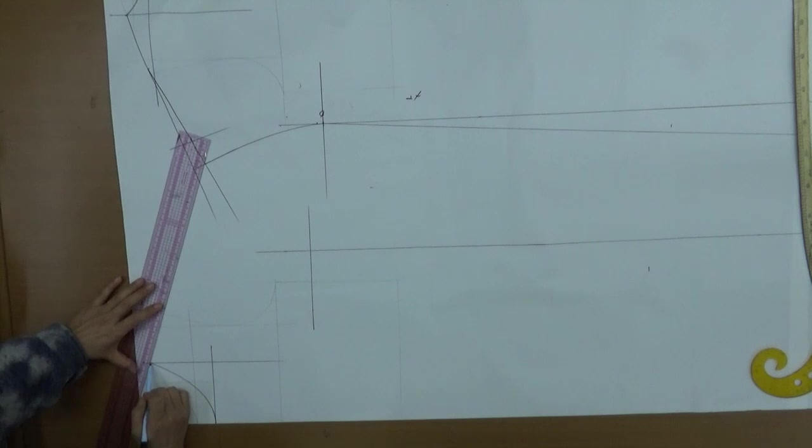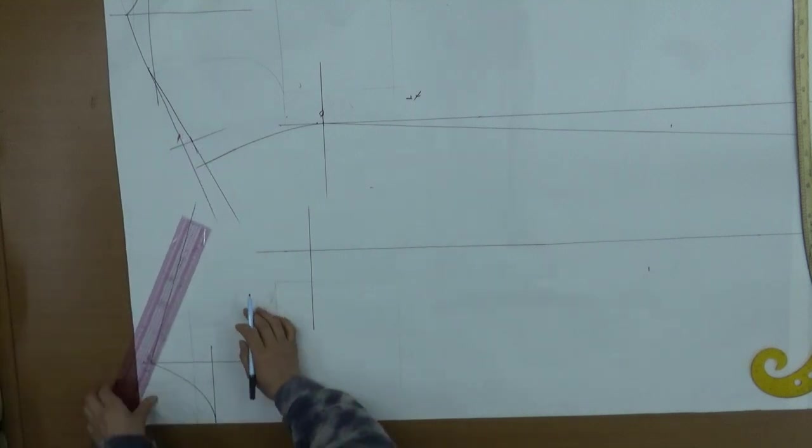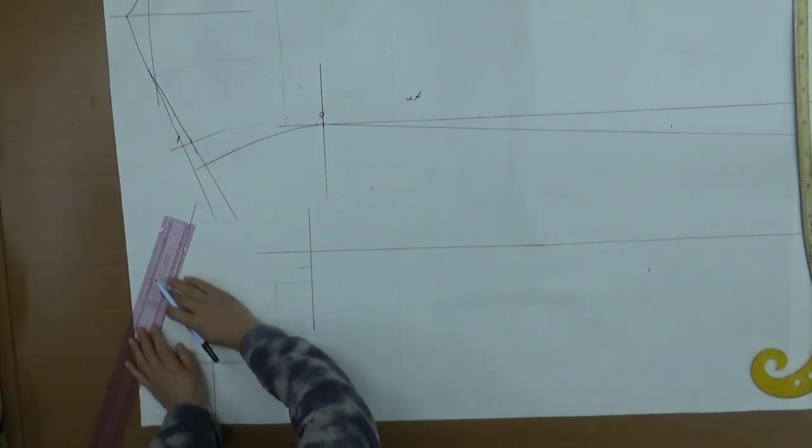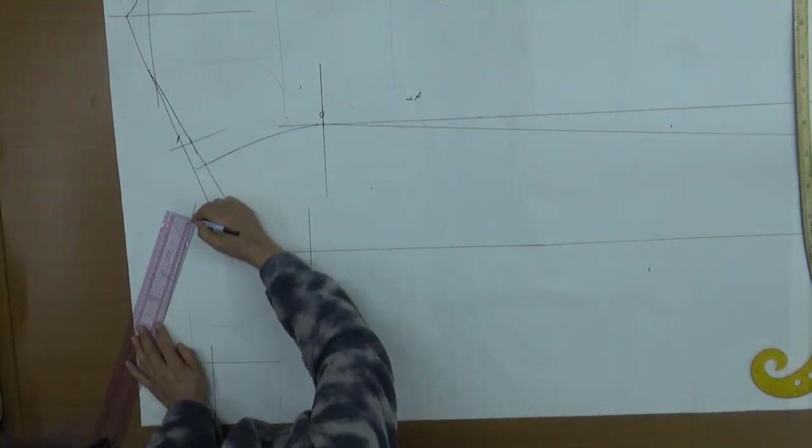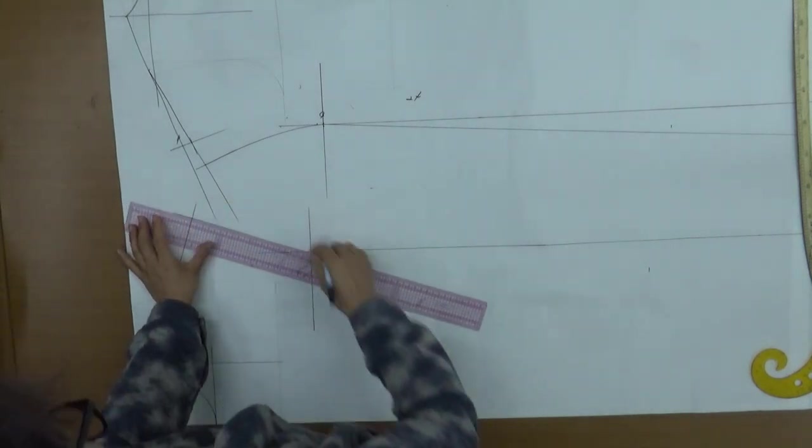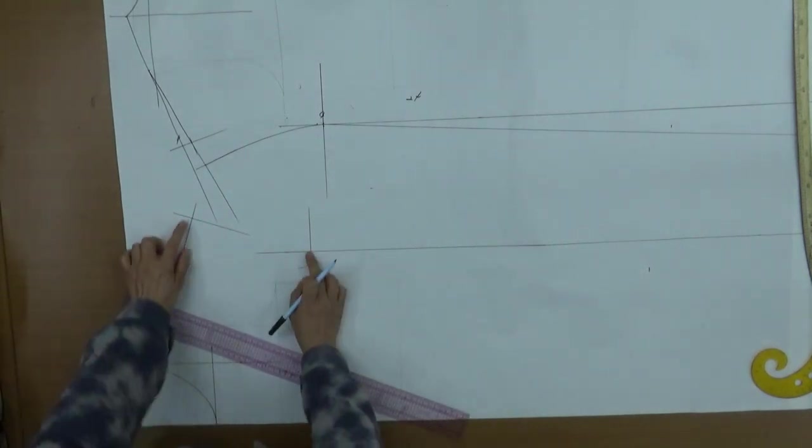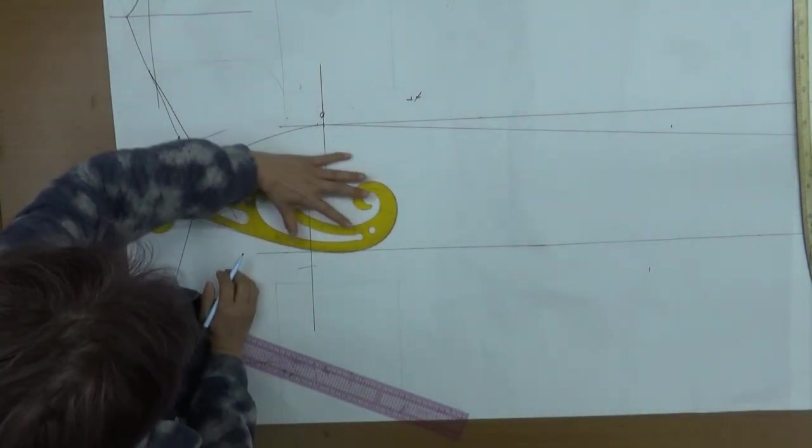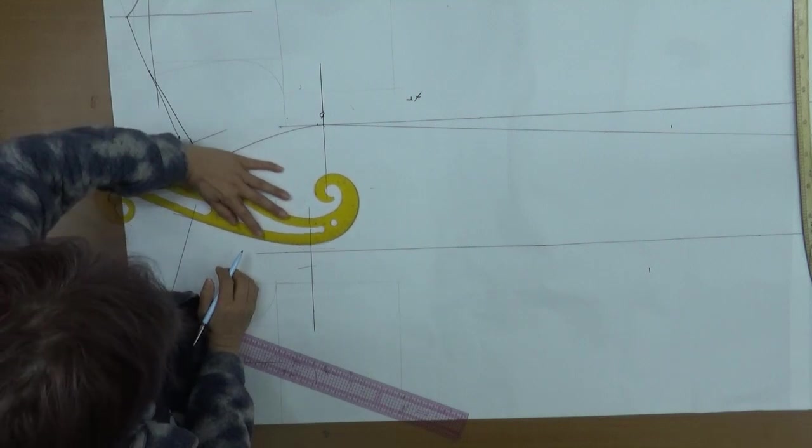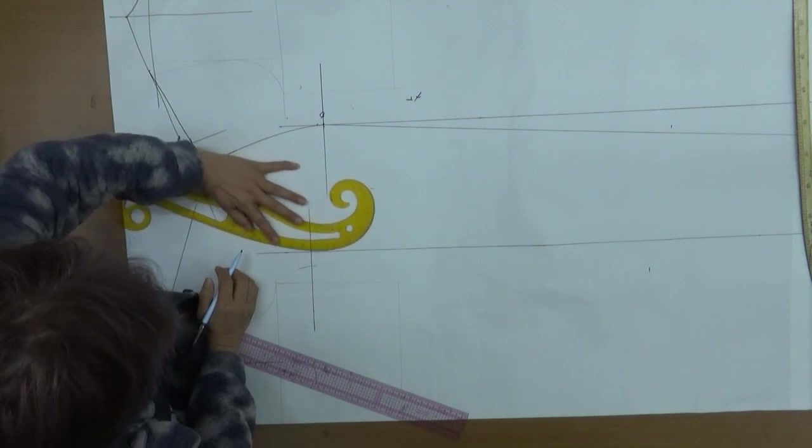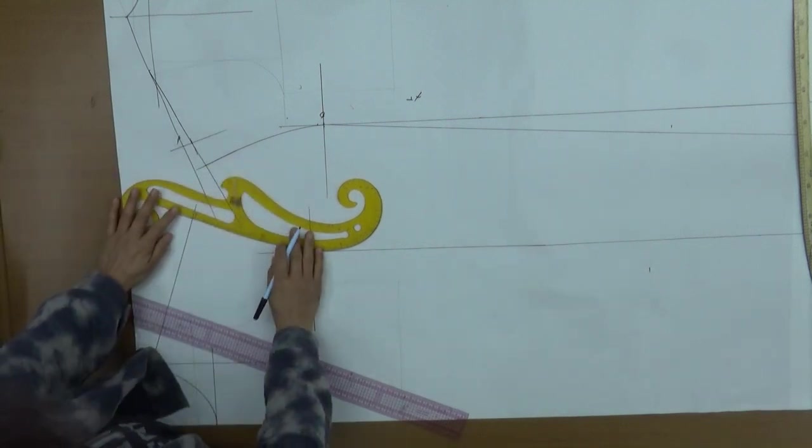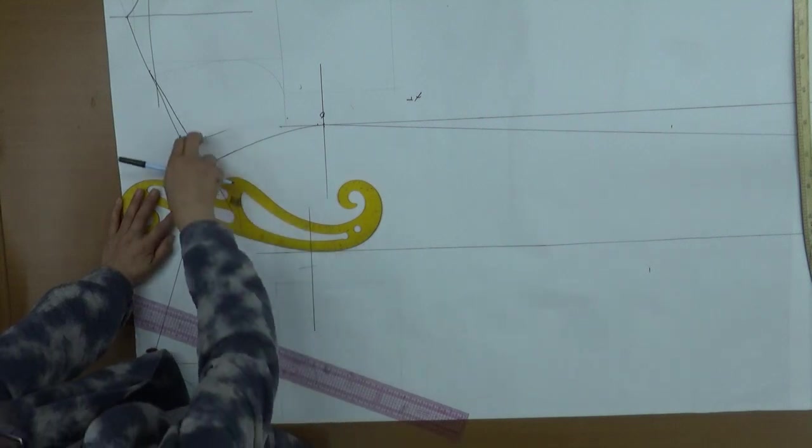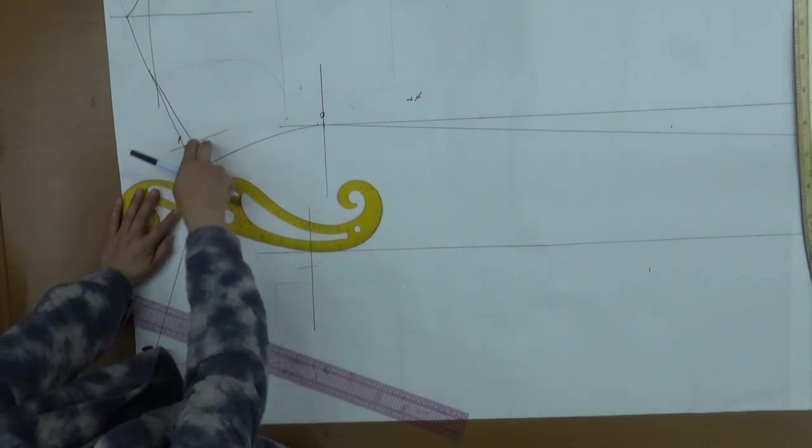Lower by 6cm. Then raise 1cm here. Connect like this, and I'll add a line here since there's nothing here. Just in case, lower 8cm and I'll add one button loop here at the top. Got it? When enlarging, think carefully about the relationship with this and enlarge accordingly. You can just do the back panel as is.